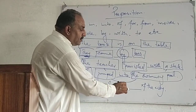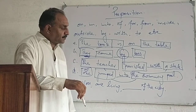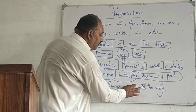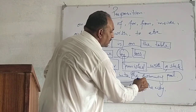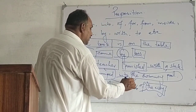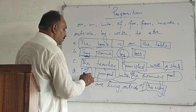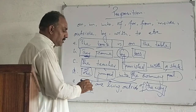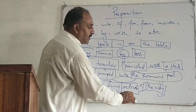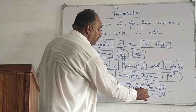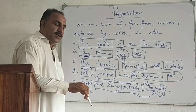Another example: 'You are living outside of the city.' 'You' is a noun phrase, 'are living' is a verb phrase, 'outside' is an adverb of place, and 'the city' is a noun phrase. To make the relationship between the two adverb phrases, we use 'of' — 'outside of the city.'